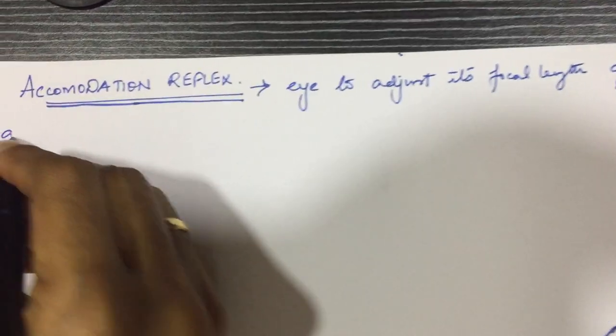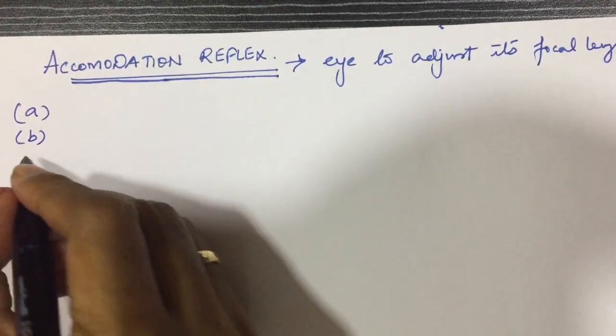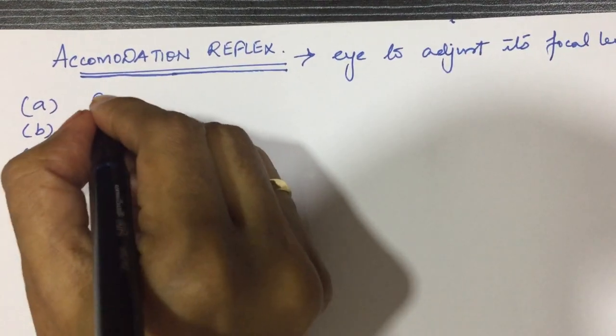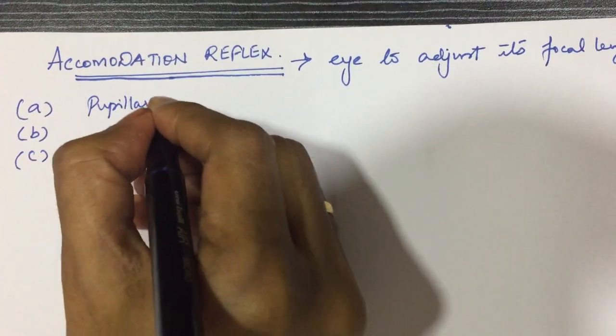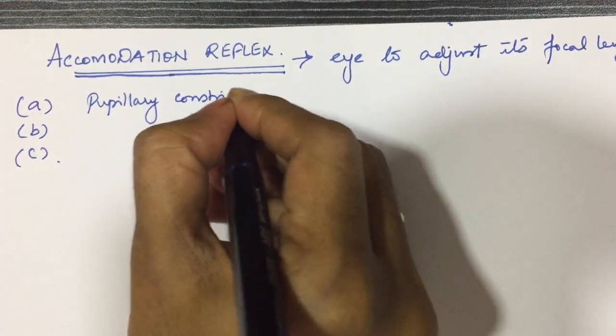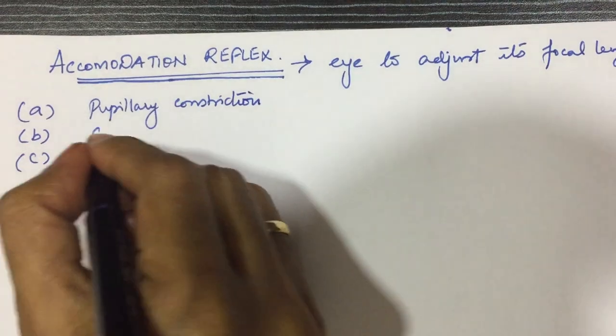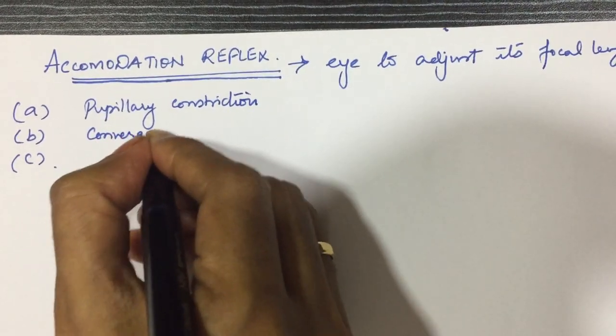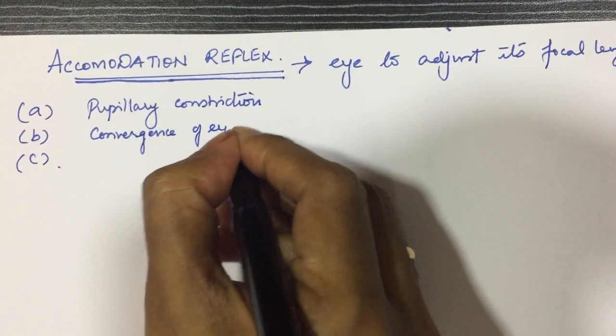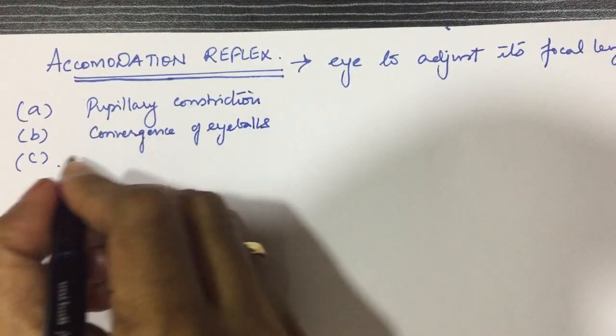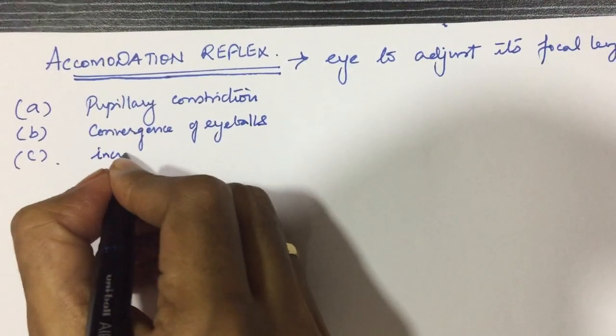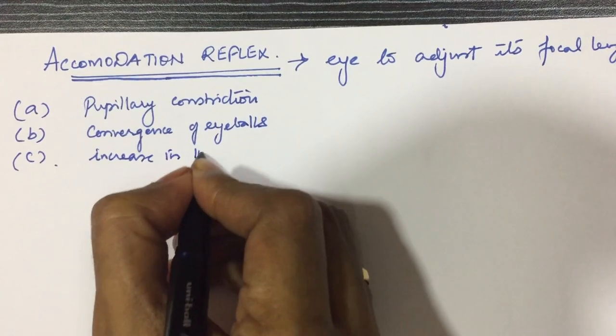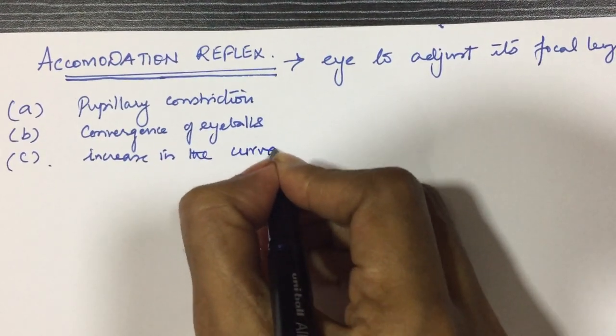What are the three main features of accommodation? First is pupillary constriction, second convergence of eyeballs, and third increase in the curvature of lens.